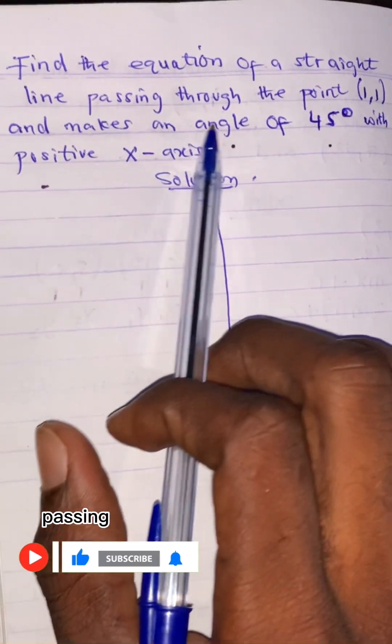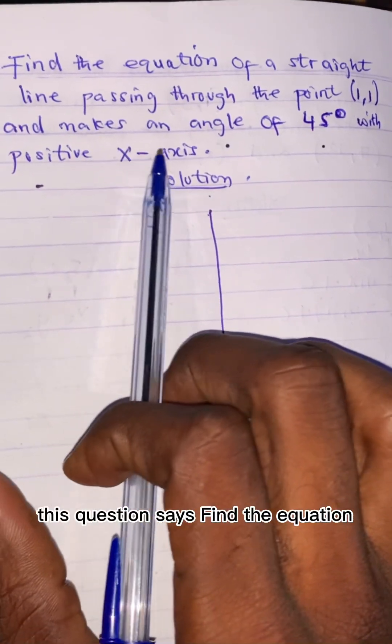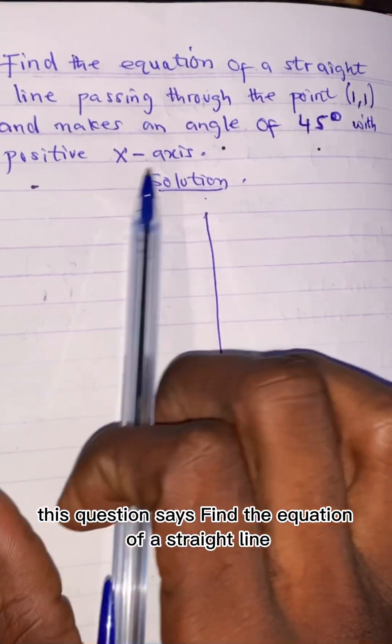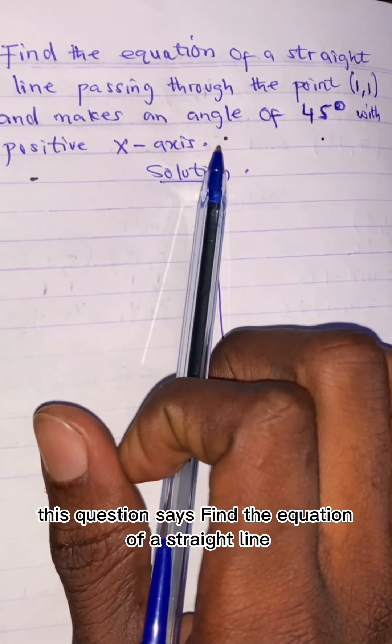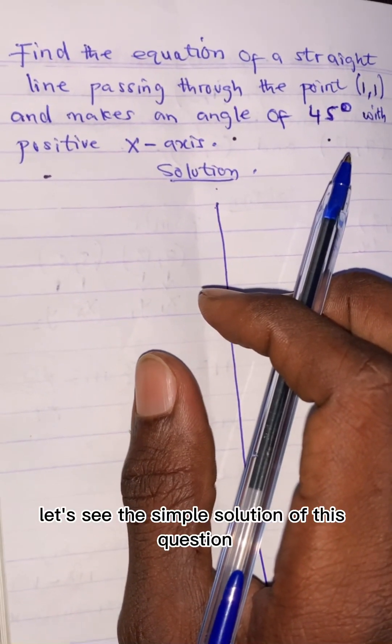find the equation of a straight line passing through the point (1,1) and it makes an angle of 45 degrees with positive x-axis. Very interesting. Let's see the simple solution of this question.